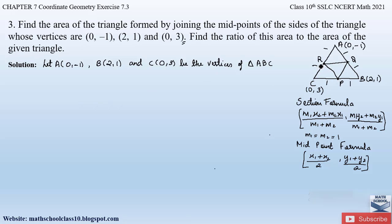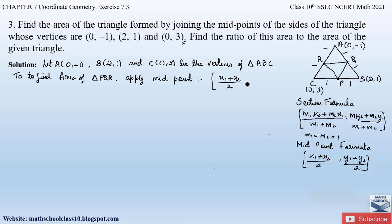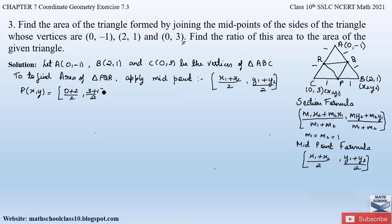To find the coordinate of point P, take C as (x1, y1) and B as (x2, y2). Applying the mid point formula: x = (0 + 2) / 2 = 2/2 = 1, and y = (3 + 1) / 2 = 4/2 = 2. So the coordinates of P are (1, 2).